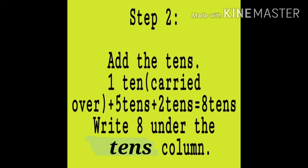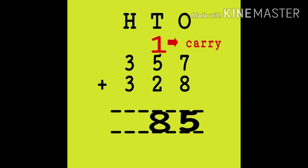Now let's look at step number 2: add the tens. We have 1 ten which is carried over, plus 5 tens plus 2 tens equals to 8 tens. So we will write 8 under the tens column. To summarize: 7 plus 8 equals 15, 1 is carried over, then 1 plus 5 plus 2 equals 8. So 8 is written under the tens column.